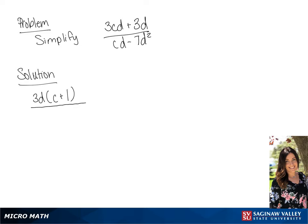In the denominator, we can factor out d, so we have d times c minus 7d. We are going to end up with the final answer of 3c plus 3 over c minus 7d.